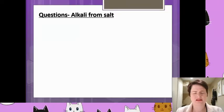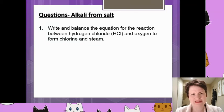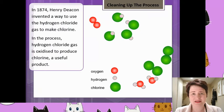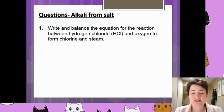So first off, let's remind ourselves what those questions actually were. We saw in the LeBlanc process that lots of waste hydrogen chloride was produced, and what they did was chuck this down the drains, which was not a great idea. They kept doing that for a long time until, in 1874, Henry Deacon found a way to oxidise the hydrogen chloride to make it into chlorine gas, which could then be used to do other things. The question takes that reaction and asks you to balance that equation.